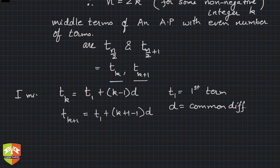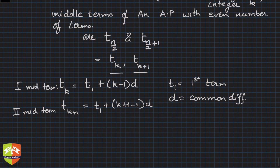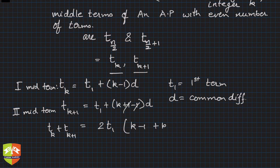They are saying add both of them, so let's add both of them. You'll get t_k + t_{k+1} = t_1 + t_1, which gives you 2t_1, and this is simply d common: (k-1) + k. This one and this one will go, so only k will be left.